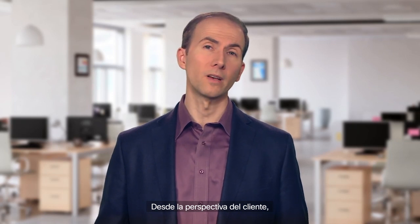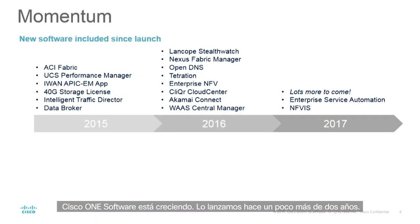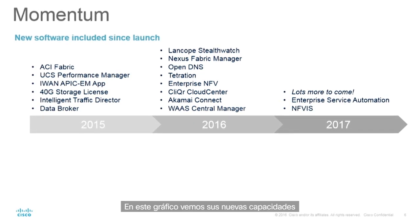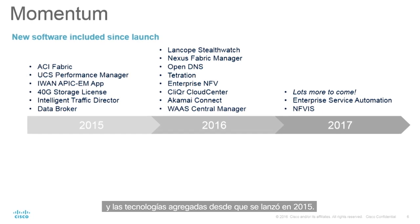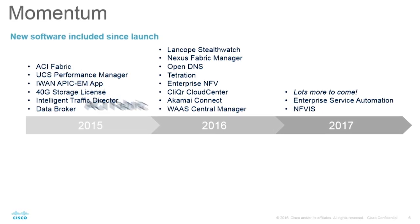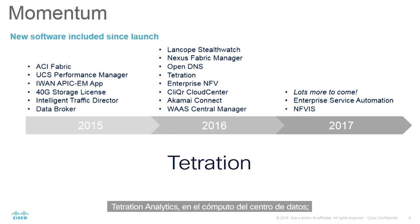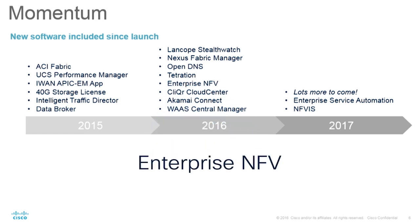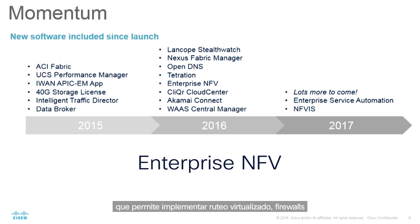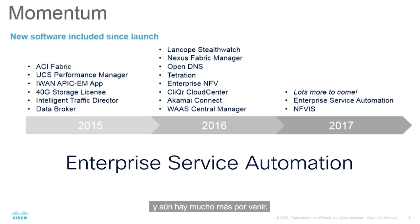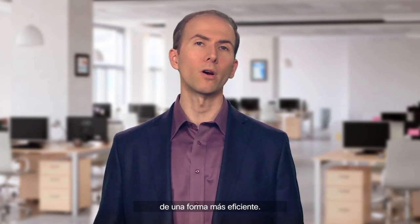There's a lot of momentum with Cisco One. We launched it a little over two years ago, and what you can see on this visual are all of the new capabilities and technologies added to Cisco One since it launched in 2015. Things like ACI fabric in the data center on the Nexus 9K portfolio, Tetration analytics within the data center on the compute side, even new virtualized delivery models like Enterprise NFV — where you can deploy virtualized routing, firewall, and wireless controller on an X86-based architecture. We've already added new automation capabilities in 2017, and there's lots more to come. Think of Cisco One Software as a way we're making our innovation available in a more seamless fashion.